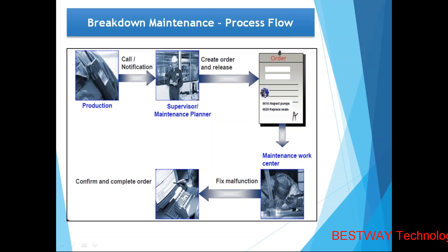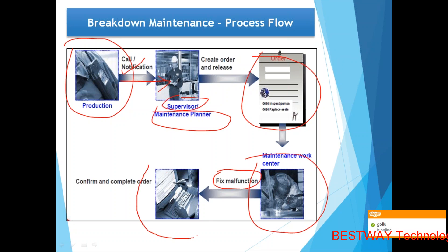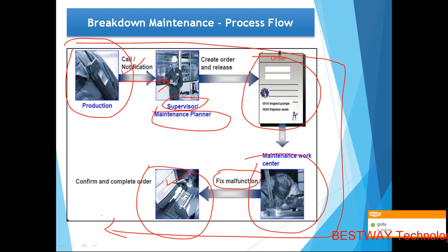When a machine is under breakdown, the production department raises a notification in the SAP system. That notification goes to the maintenance supervisor or planner, who accepts it and creates a maintenance order. Using this maintenance order, the maintenance technician does the work — he fixes the malfunction and does the repair activity. Once done, you confirm and complete the order in SAP. This is the basic process flow followed in real time.